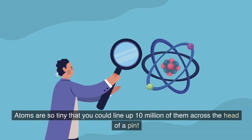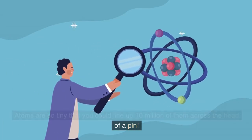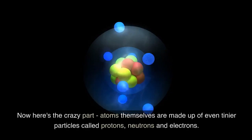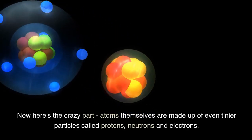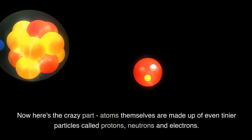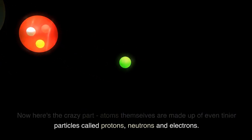Atoms are so tiny that you could line up 10 million of them across the head of a pin. Now here's the crazy part - atoms themselves are made up of even tinier particles called protons, neutrons and electrons.